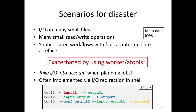This is often implemented via IO redirection in the shell. Tool one takes input from a file input one and writes output to output one. Tool two takes input from output one and writes its output to output two. Tool three uses the output of tool two as a configuration file and produces some output. All of this can involve a large number of small file operations, and if each read and write happens in small amounts, you may have a problem — so you have to plan and think about this.